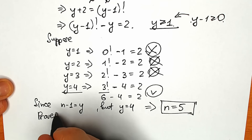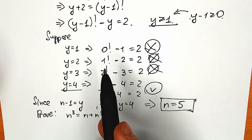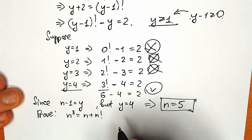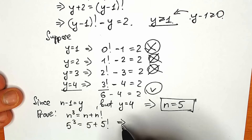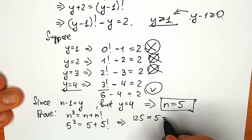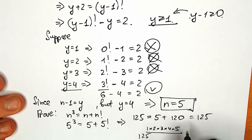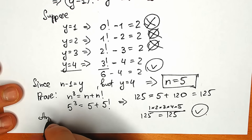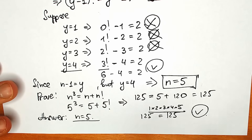Let's verify our answer. The original equation is n cubed equal to n plus n factorial. With n=5: 5 cubed equals 5 plus 5 factorial. That's 125 equal to 5 plus 120, which gives 125 equals 125. This confirms our root is correct.